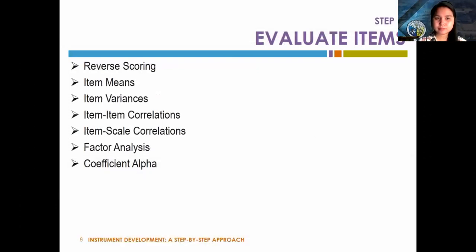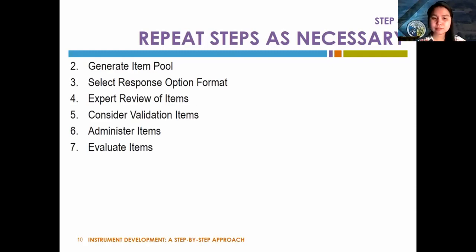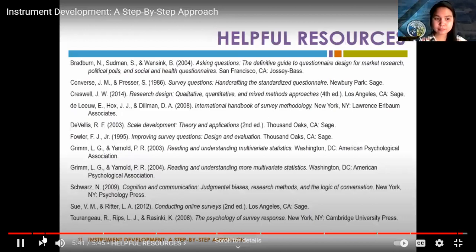Once items have been administered to a development sample and responses organized into a data file, we can begin evaluating them statistically — considering the performance of each item individually as well as the entire set. As we evaluate items, we decide whether they are performing as desired. If not, we go back to earlier steps: writing new items, fixing confusing wording, or changing response formats, then repeating data collection and item evaluation. Basically, we repeat steps two through seven until satisfied with both the item pool and item performance.